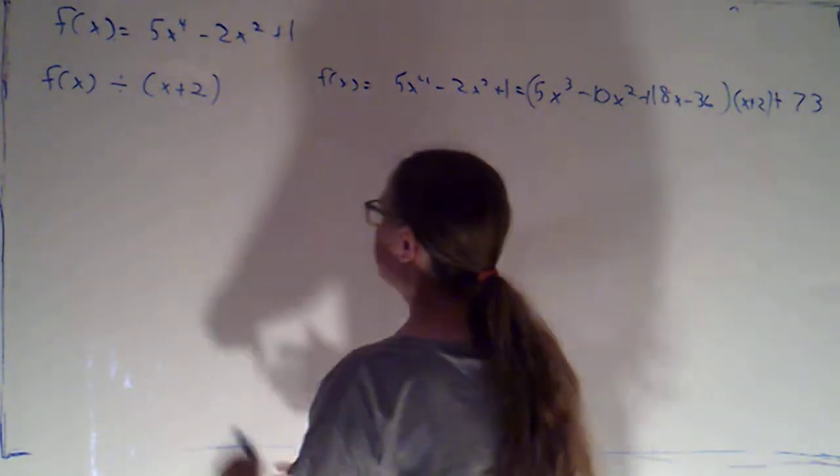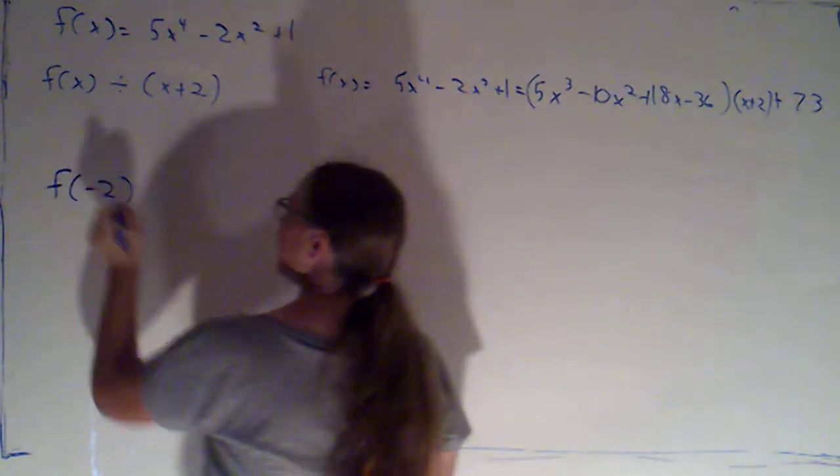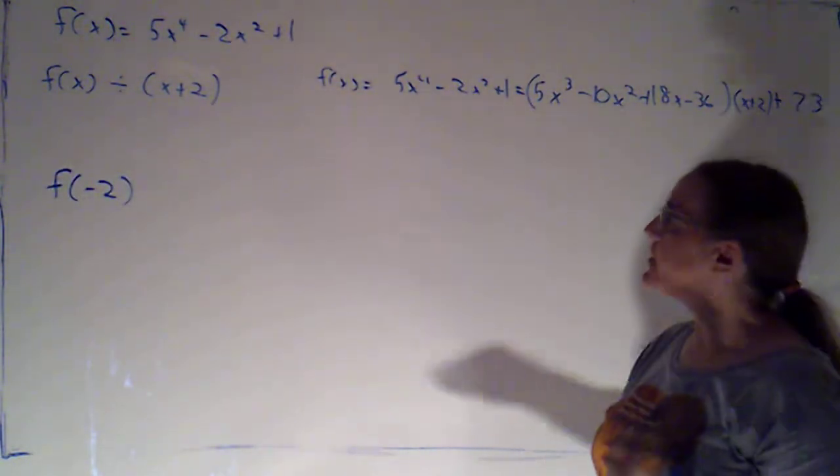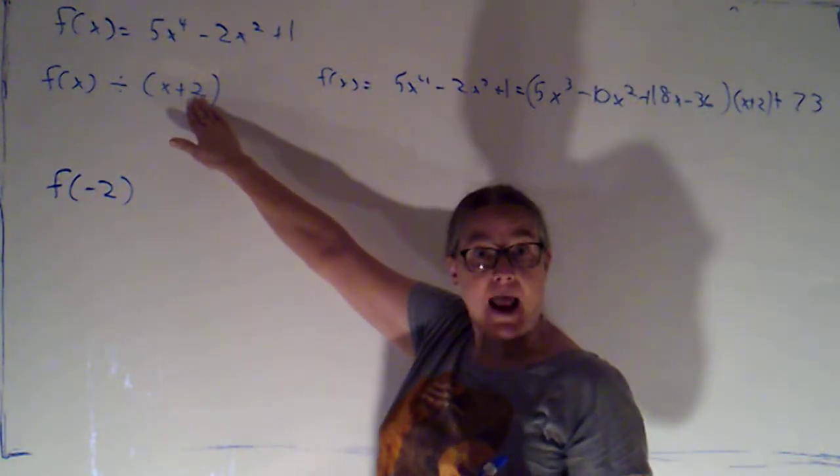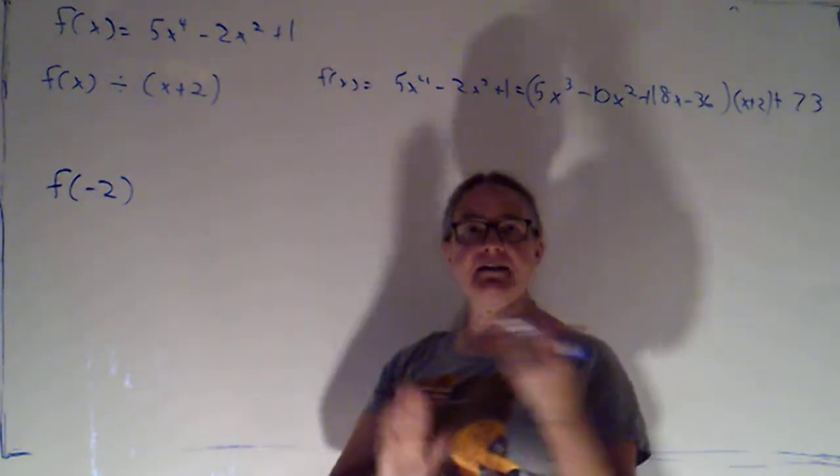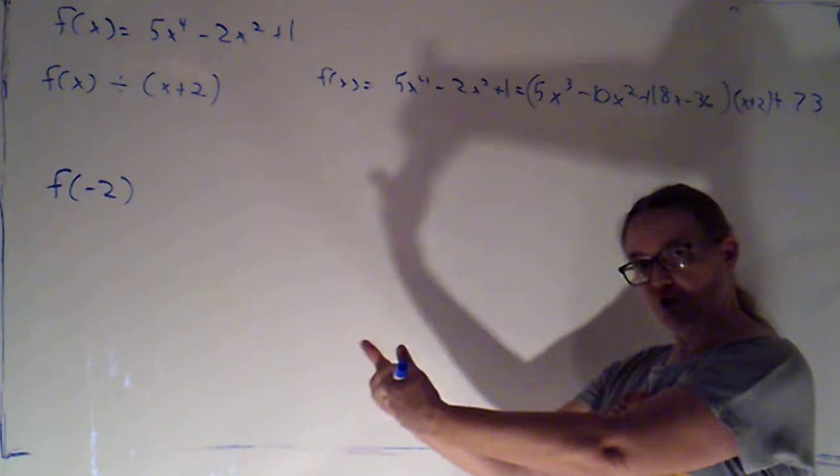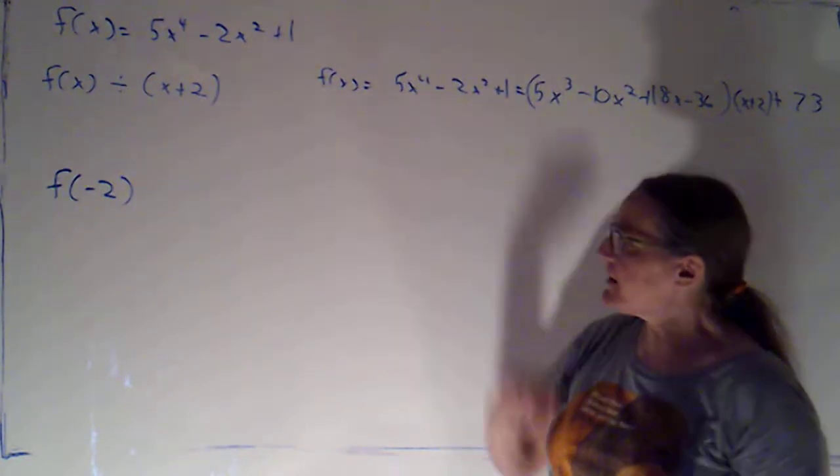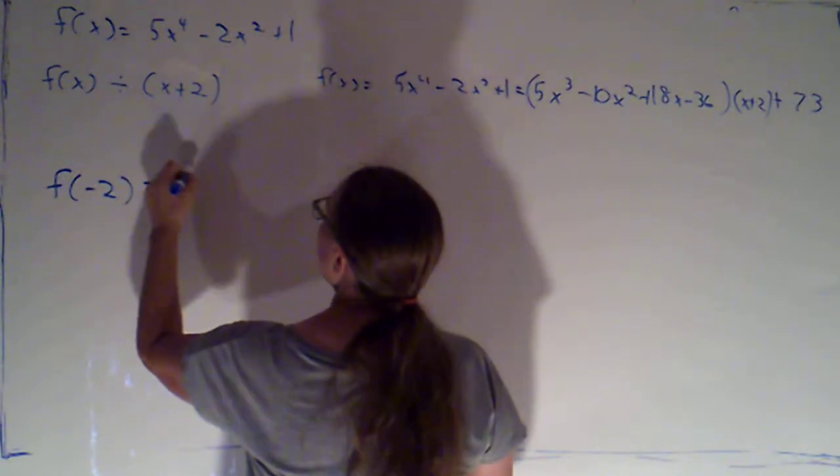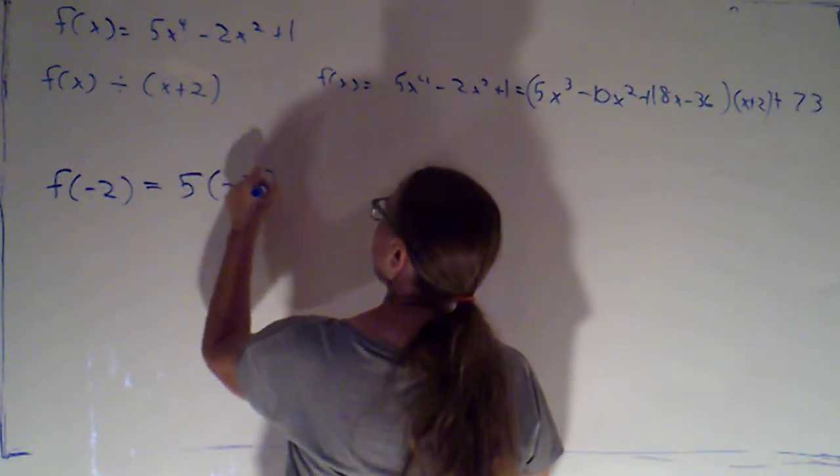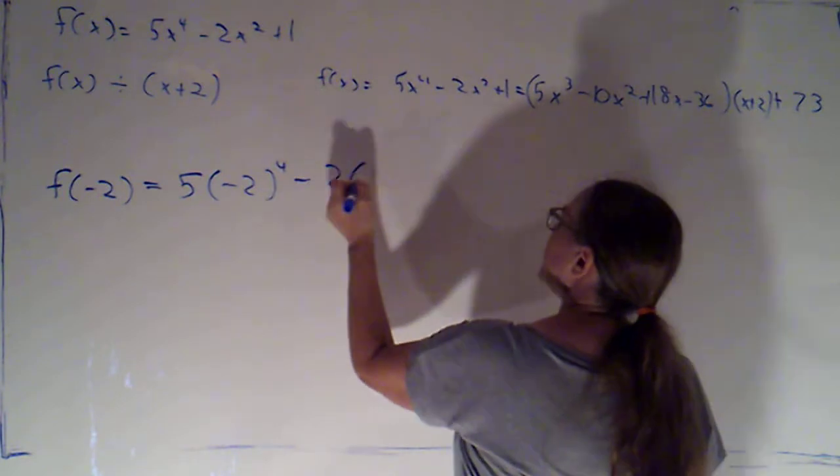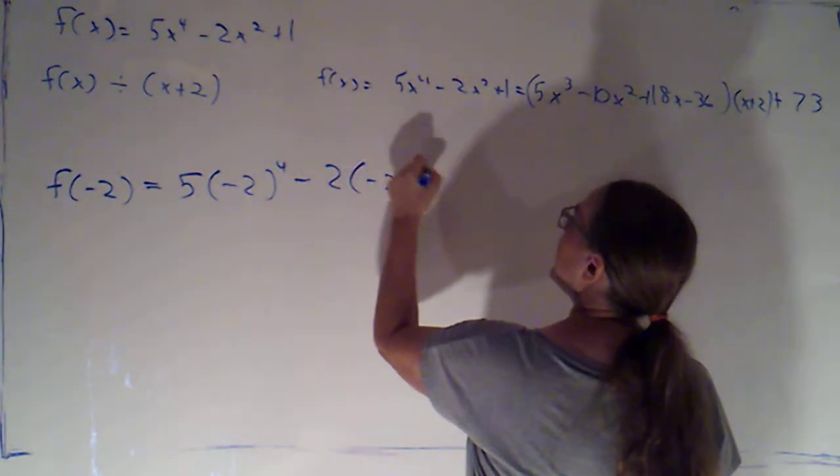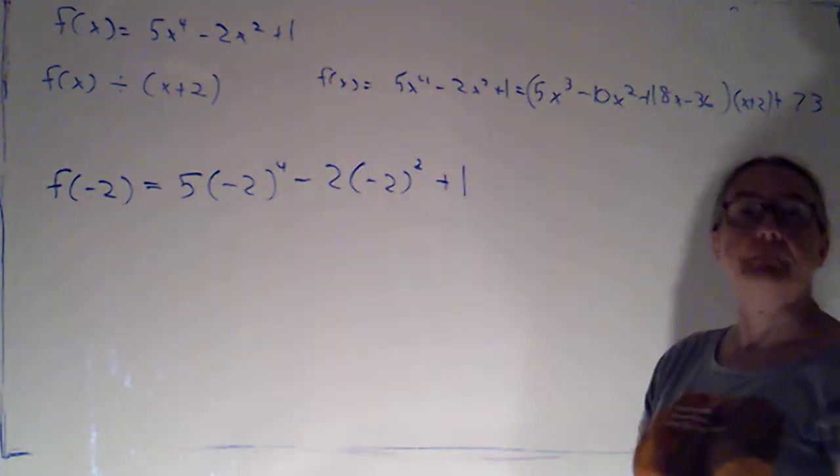If I were to simply evaluate my function at negative 2, so that's the number here that I'm subtracting from x. When we did our synthetic division, negative 2 was the number that we wrote on the outside. If I just do this the traditional way, I'm going to just plug in negative 2. So I have 5 times negative 2 to the 4th minus 2 times negative 2 squared plus 1.